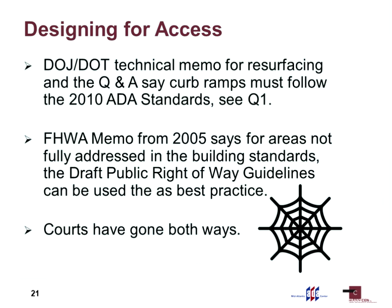So how do we decide what to do and where do we look for guidance? Several years ago, the Department of Justice and the Department of Transportation came up with a technical memo for resurfacing. In that memo, they didn't make any new rules — they just clarified the intent of existing rules. One important thing is that curb ramps have to follow the 2010 ADA standards. You can use the public right-of-way guidelines for areas not specifically covered in the building standards, and a 2005 Federal Highway memo recognized them as best practices.